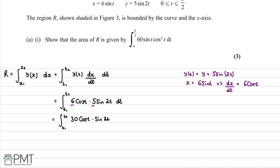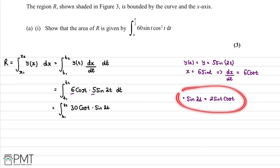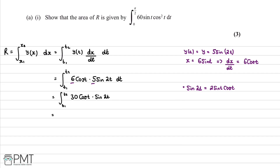We apply the trigonometric identity: sin(2t) = 2 sin(t) cos(t). Substituting this into our integral, the limits remain the same and we now have 30 lots of cos(t) multiplied by 2 sin(t) cos(t), which simplifies further.